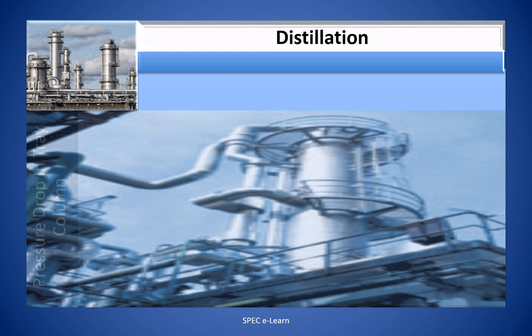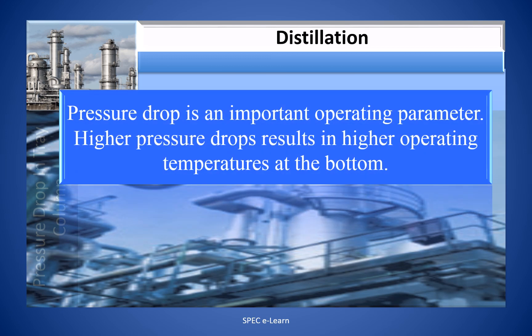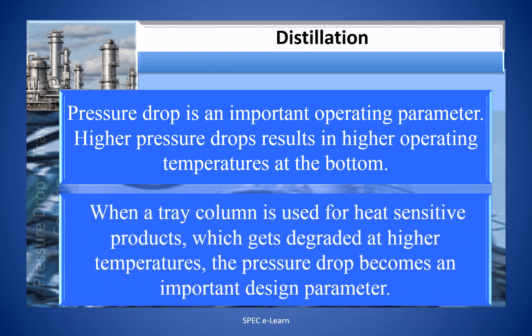I am not giving any formula here. I also recommend you not to mention any formula for dry hole pressure drop or pressure loss due to liquid head on the tray in the interview. Explaining formulas leads to more questions that may be difficult to explain sometimes — you will get caught. Unless you are confident, do not attempt to take the chance. Explain nicely with a sketch — that is what is needed. Pressure drop is an important parameter. High pressure drop results in high operating temperatures at the bottom. When a tray column is used for heat-sensitive products which get degraded at higher temperatures, the pressure drop becomes an important design parameter.